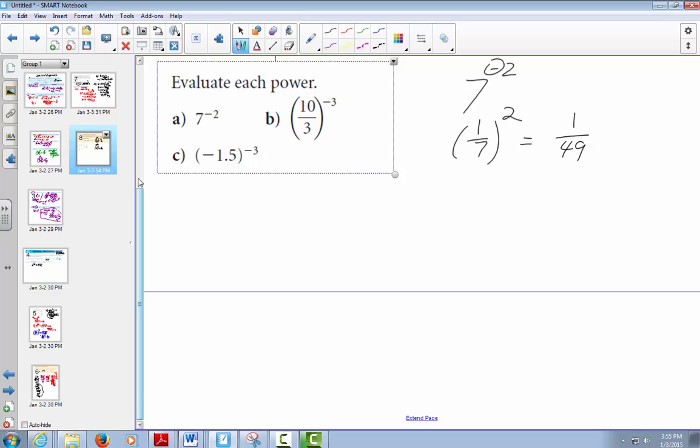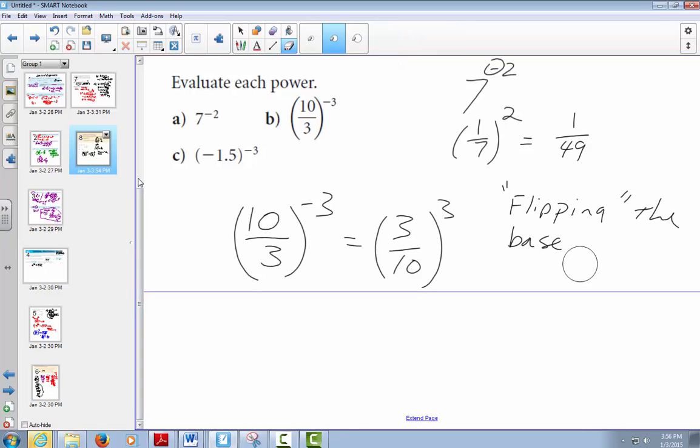Negative means I flip the base. Negative in the exponent. So 10 over 3 to the negative 3. That means I have 3 over 10 to the 3. So by flipping the base, the base gets rid of the negative.